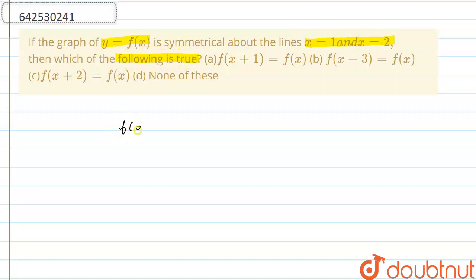So we know that if fx is symmetrical about x equals to a, it satisfies the following condition: f of a plus x equals f of a minus x. Now, in the question we are given that it is symmetrical about x equals 1 and x equals 2, so it must satisfy this condition, that is f of 1 plus x equals f of 1 minus x.